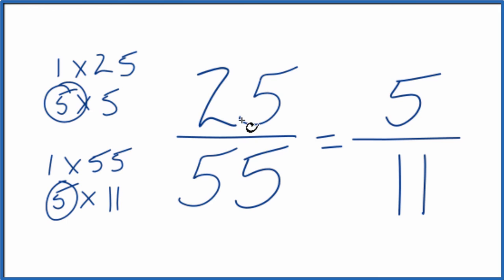5 divided by 11 and 25 divided by 55. You get the same number, just that we've simplified 25/55 down to 5/11. This is Dr. B and thanks for watching.